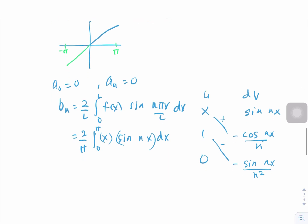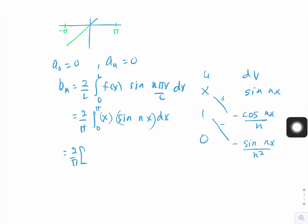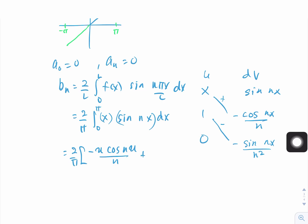Differentiating u = x gives 1, and integrating dv = sin(nx) gives −cos(nx)/n. Integrating again gives −sin(nx)/n². Applying the tabular method, we get 2 over π times [−x cos(nx)/n + sin(nx)/n²], evaluated from 0 to π.